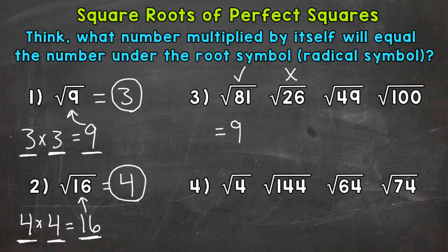Let's do the other two, which are perfect squares. The square root of 49: 7 times 7 equals 49, so the square root of 49 equals 7. And this is a perfect square. Lastly, the square root of 100: we know 10 times 10 equals 100, so the square root of 100 equals 10, and this is a perfect square.